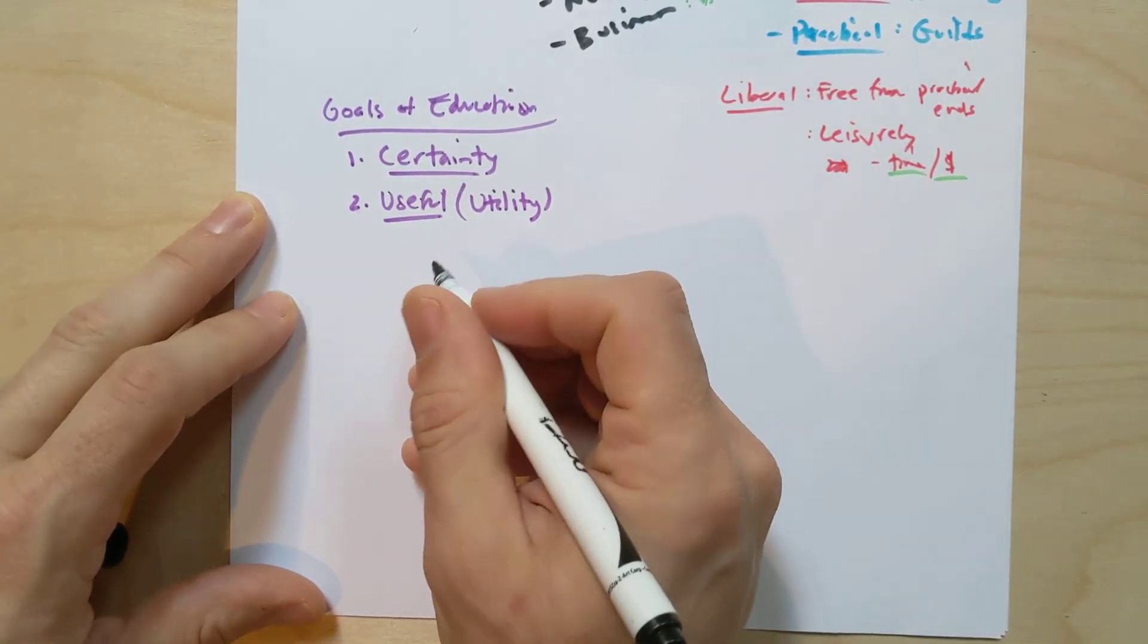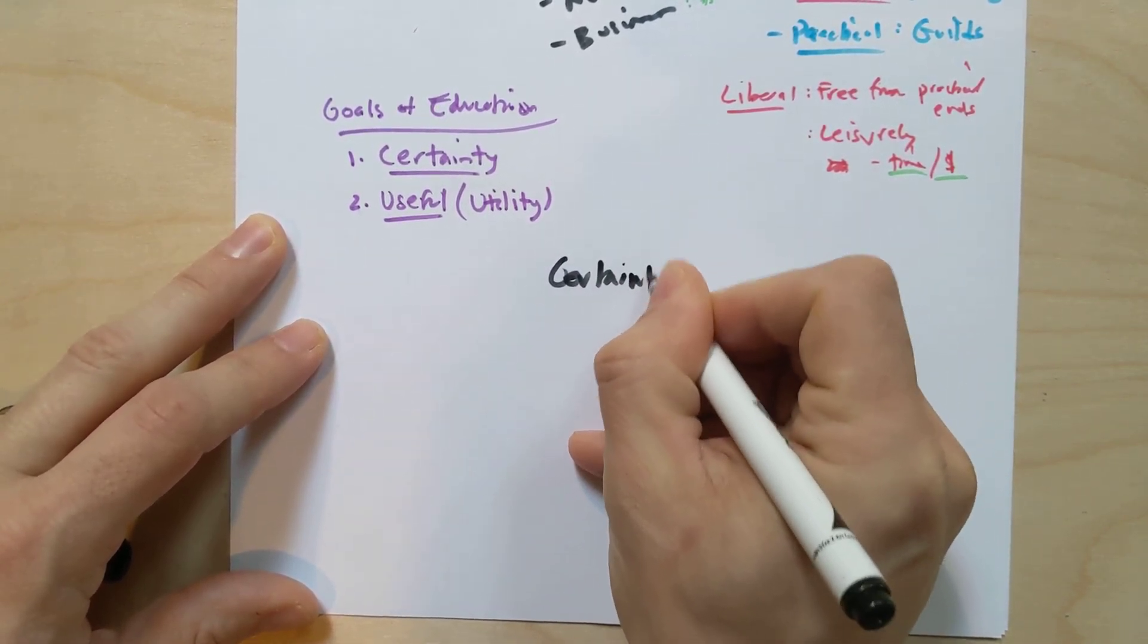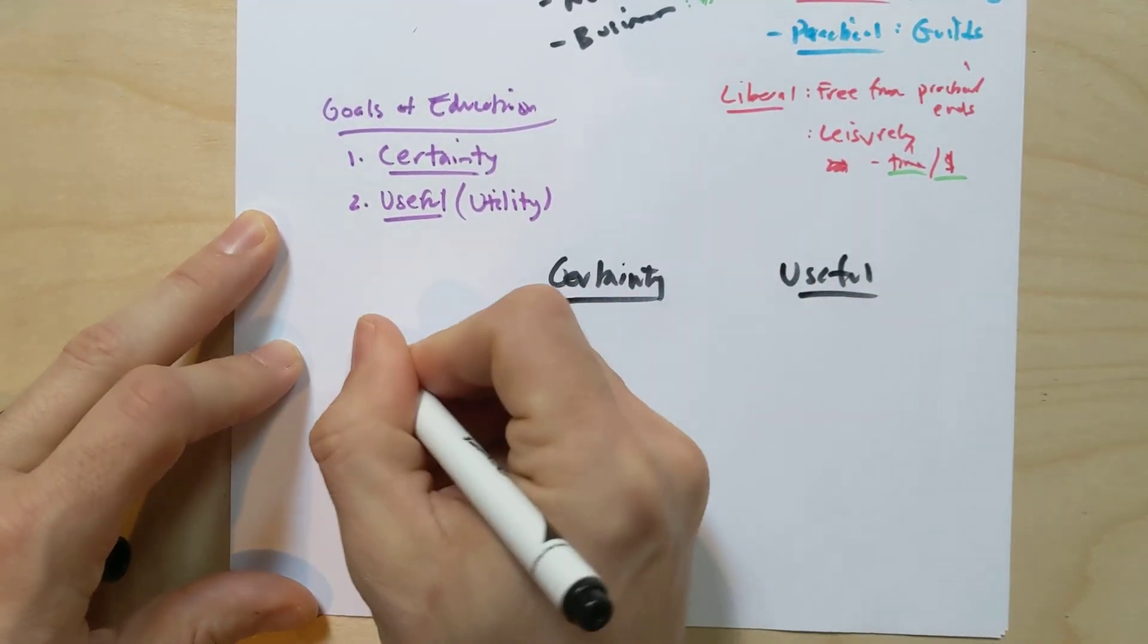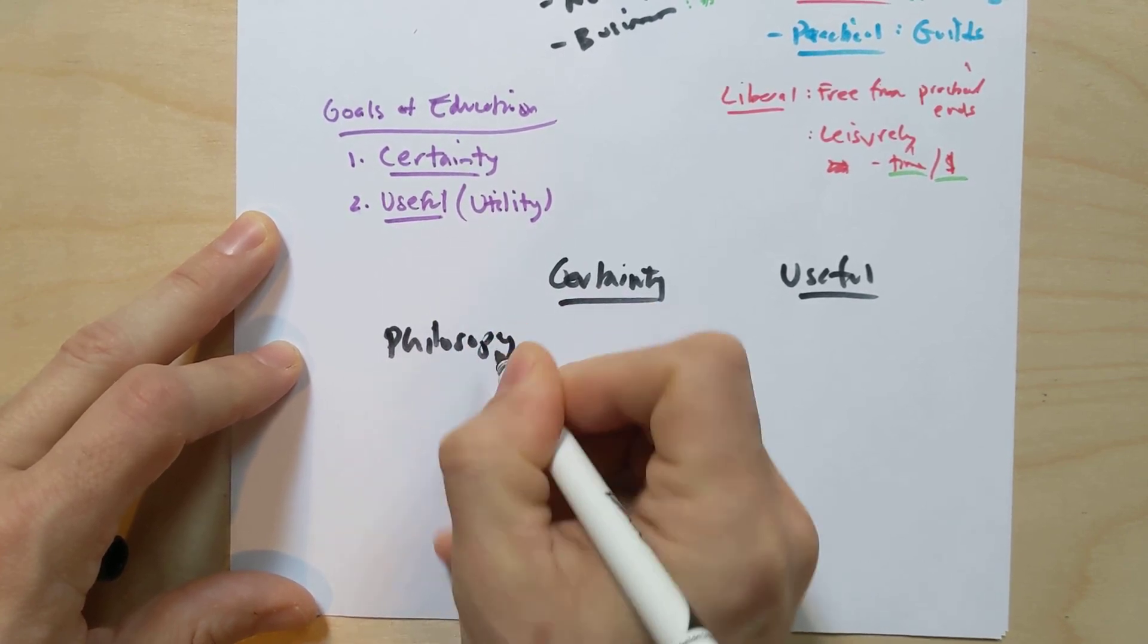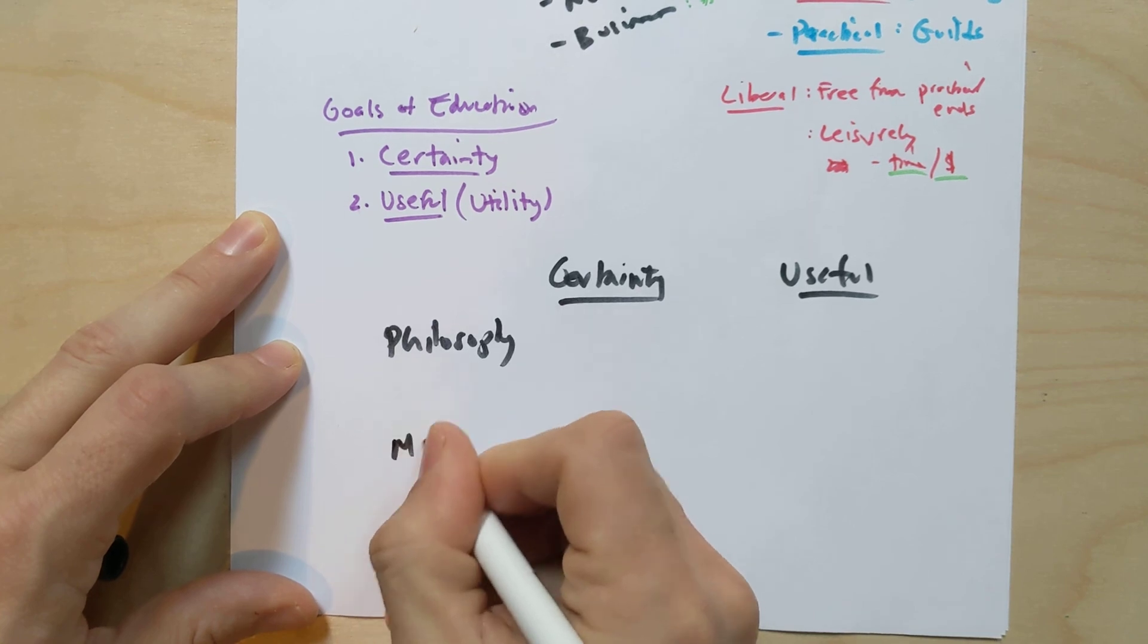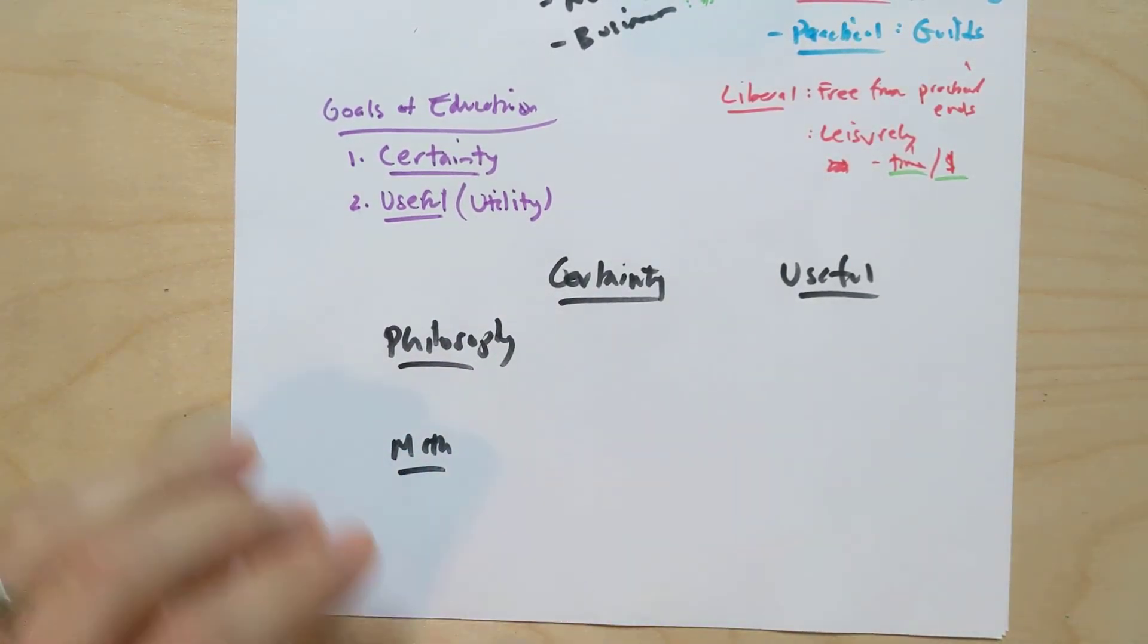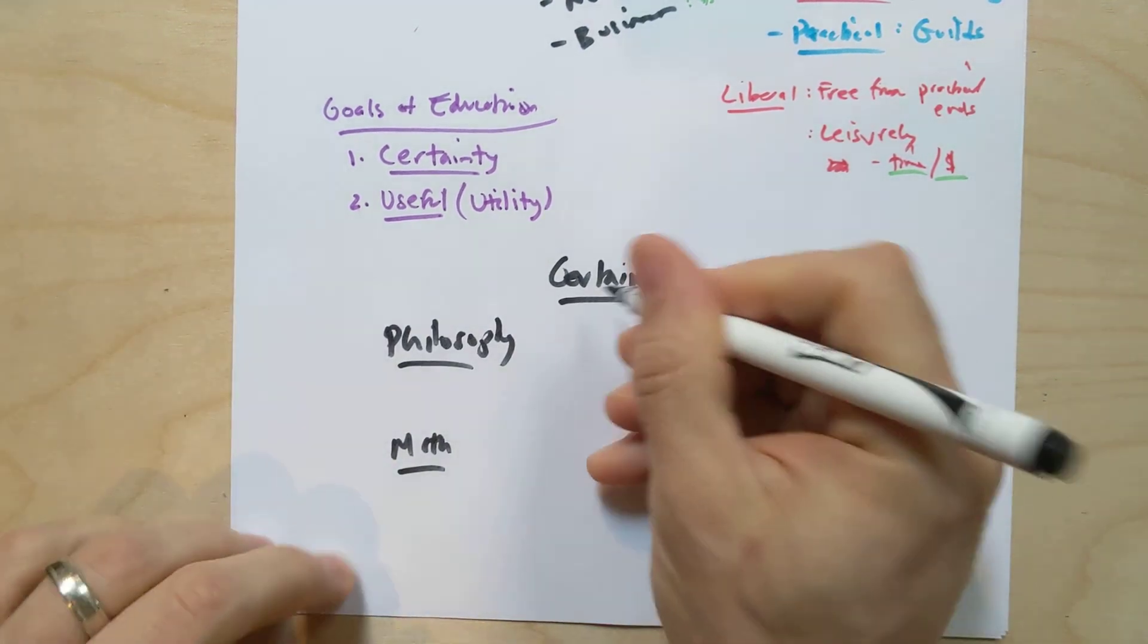And so in particular, Descartes is going to look at the certainty that exists and the usefulness that exists in both mathematics and philosophy. And we're going to start with philosophy because as we're going to see, despite Descartes being a philosopher, he's extraordinarily critical of the nature of philosophy as he's encountering it.